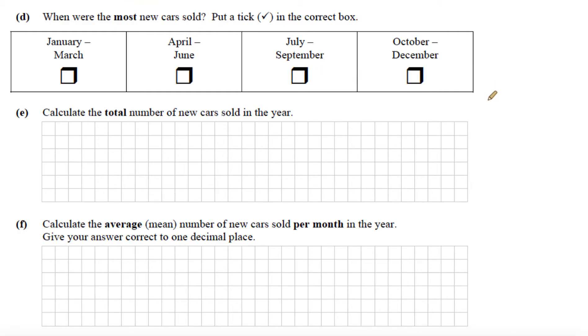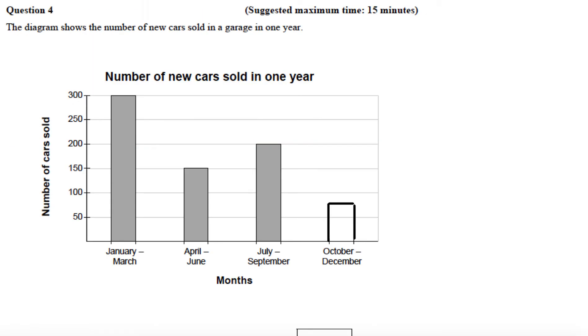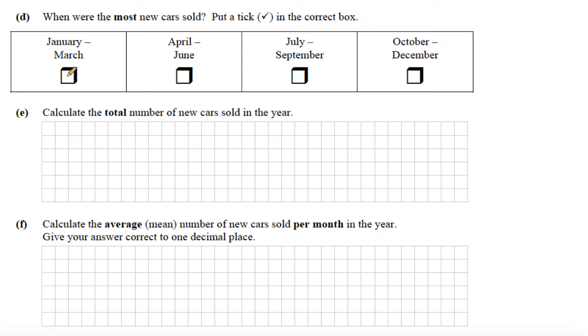Part D says, when were the most new cars sold? Put a tick in the correct box. So if we go back to the diagram, January to March was when the most new cars were sold. Well, that's the highest bar at 300, so January to March.